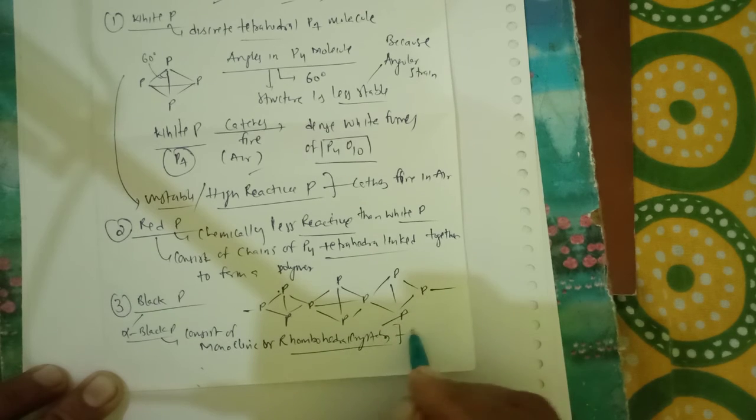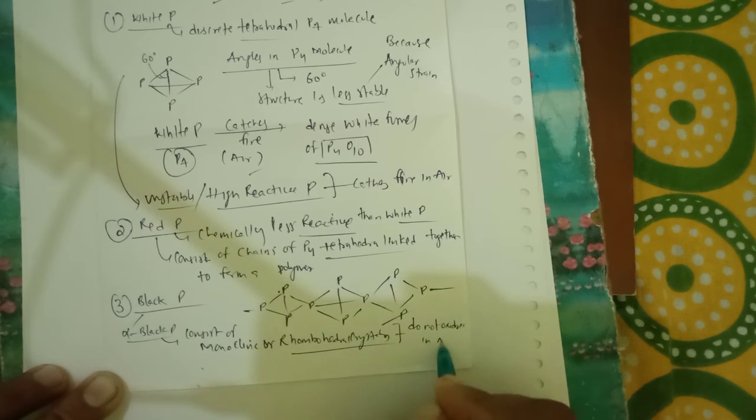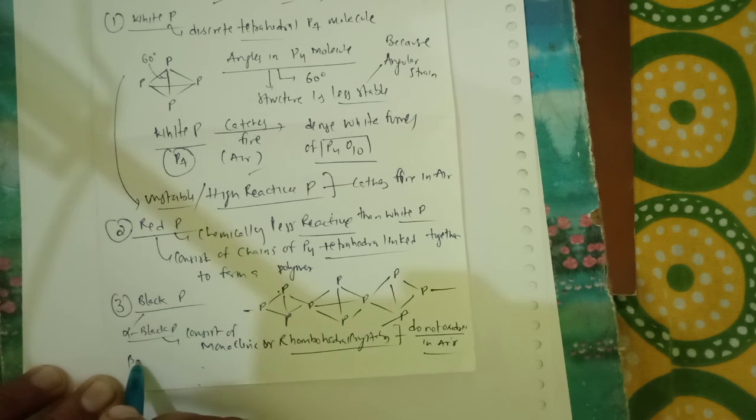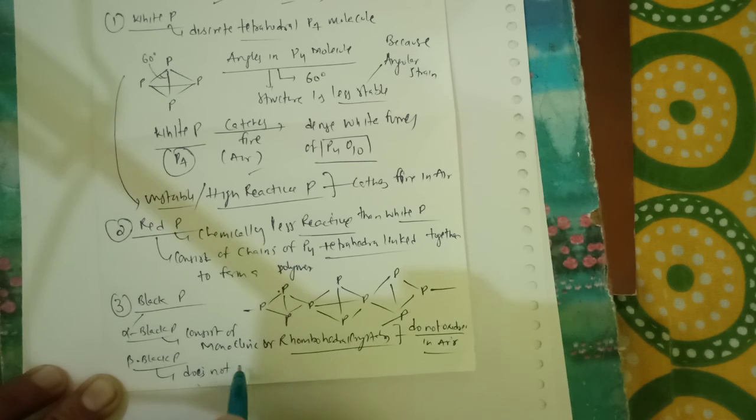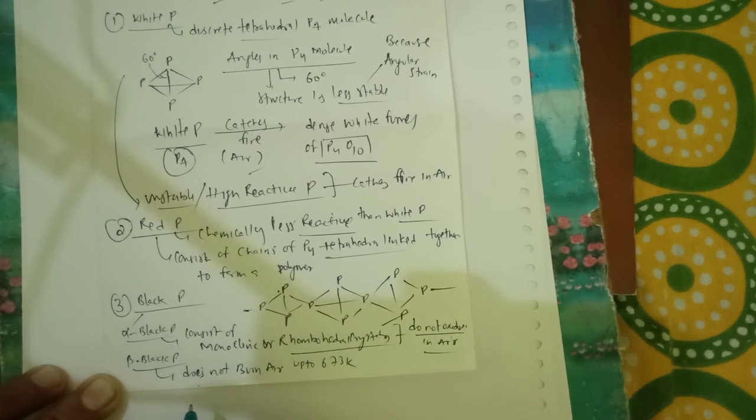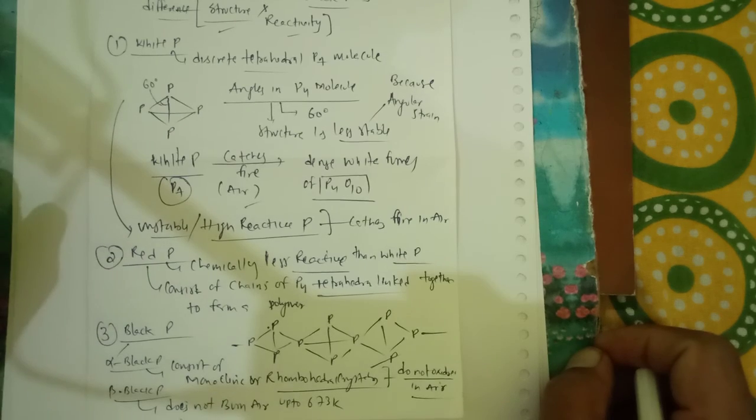It does not oxidize in air, and in case of beta black Phosphorus, it does not burn in air up to 673 Kelvin. So this is what the basic structural difference between white Phosphorus, red Phosphorus, and black Phosphorus.